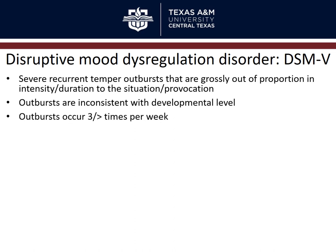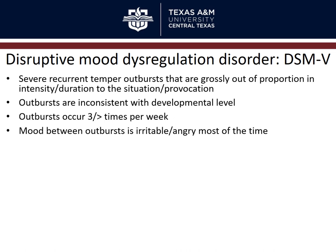The outbursts must occur three or more times per week — almost every day or every other day. The mood between outbursts is irritable or angry most of the time — really angry and throwing things, and then when not throwing things, still kind of irritable. This isn't occasional; these children are in a near-constant state of anger and irritability.